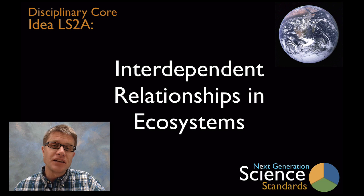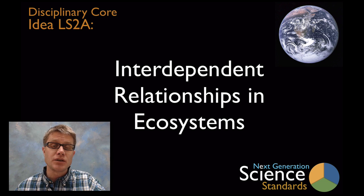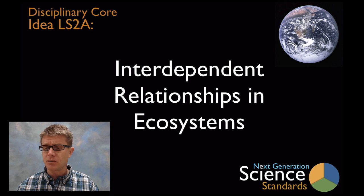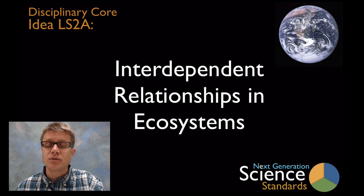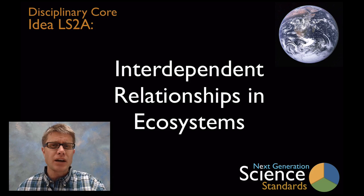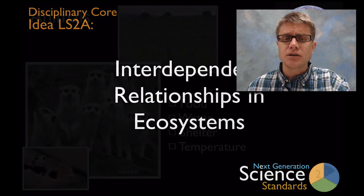Hi, it's Paul Andersen and this is Life Science Disciplinary Core Idea 2A, on interdependent relationships in ecosystems. This is at the level of ecosystems — how communities, how biotic and abiotic factors all work together to create life on our planet. So how do we get students to that level of understanding?